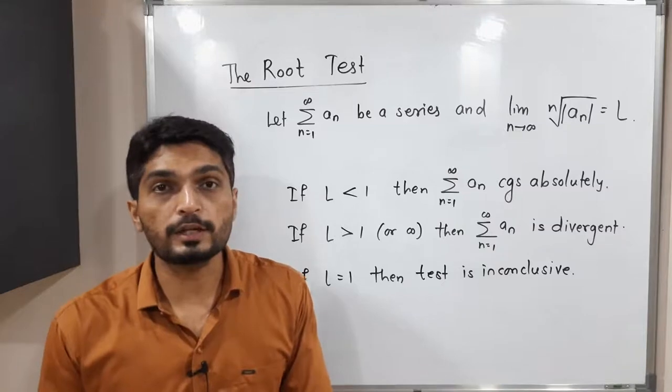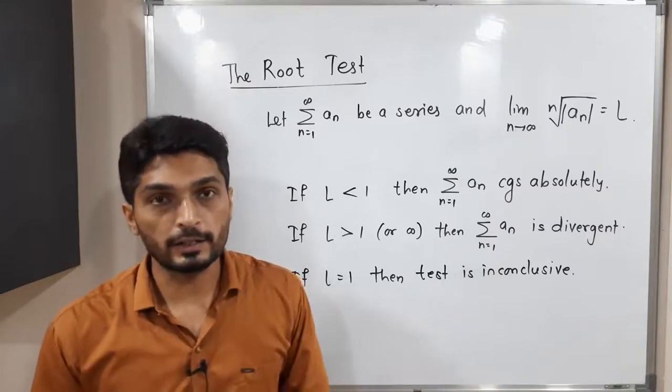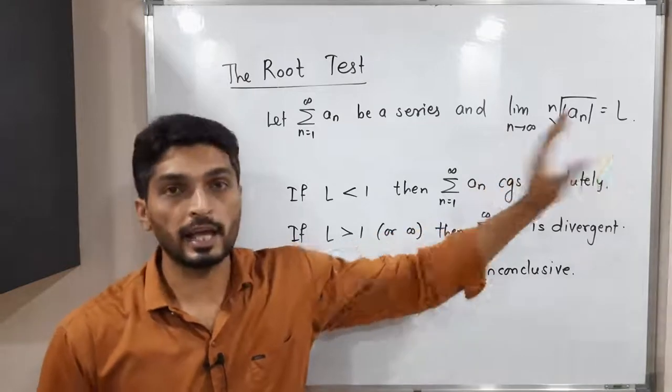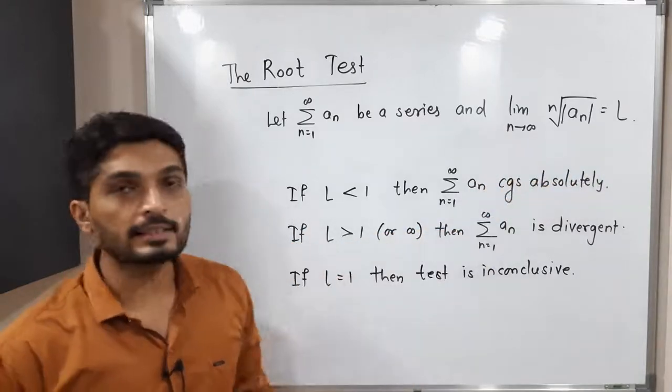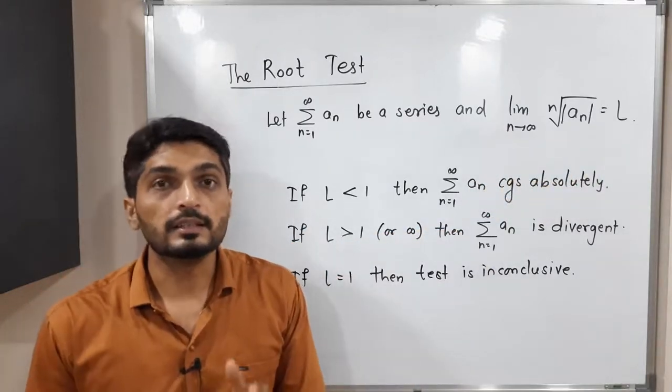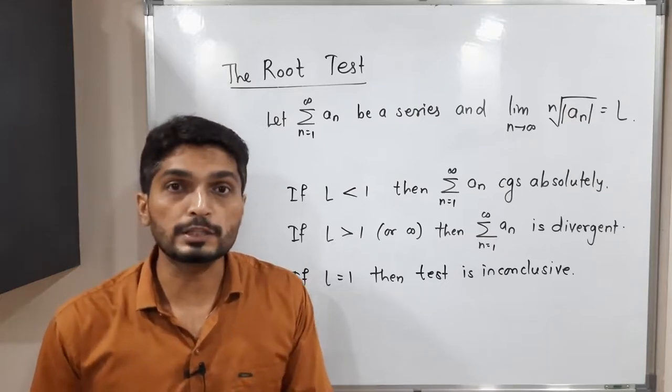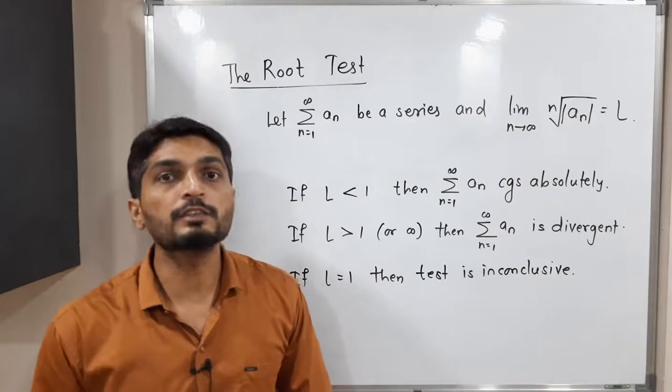We have applied mod, so that's why definitely we will have non-negative value and we are taking its nth root and value of this limit is L. If our L is less than one, then again we say the given series is absolutely convergent and absolutely convergence, hence we can say it is convergent series.